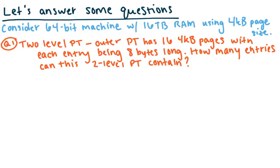Similarly to the paging example from before, I'm going to ask a few questions similar to homework and exam questions. We're back to our original machine from last time: a 64-bit machine, 16 terabytes of RAM, and a four-kilobyte page size. Assume a two-level page table. The outer page table has 16 four-kilobyte pages with each entry being eight bytes long. How many entries can this two-level page table system contain?